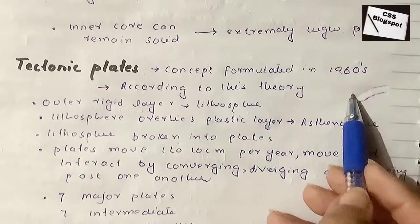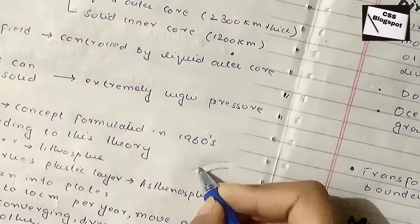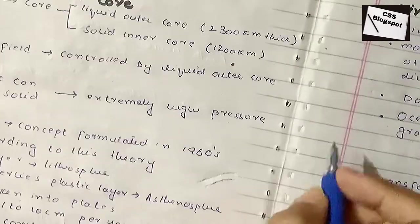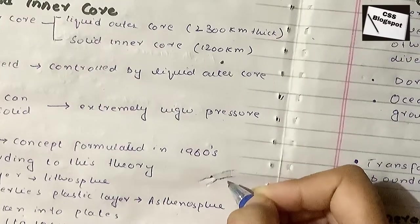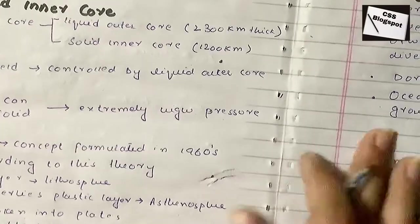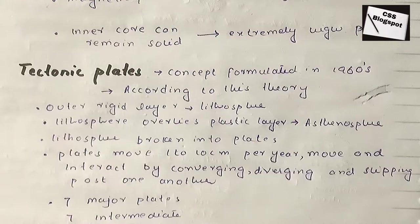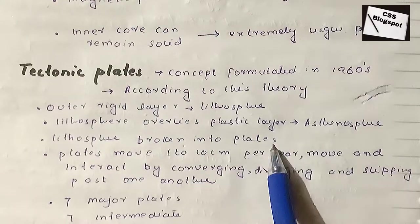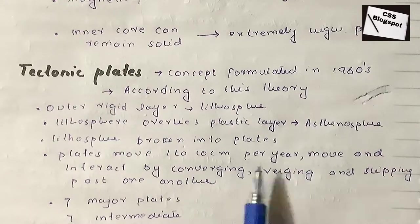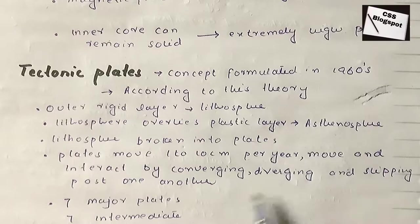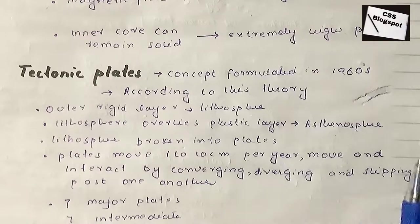The next concept, formulated in the 1960s, is tectonic plates. The outermost boundary is called the lithosphere. The lithosphere is divided into plates that move one to ten centimeters per year. These plates interact with each other—they can converge, diverge, or slip past each other.